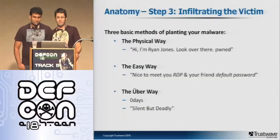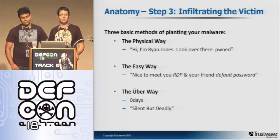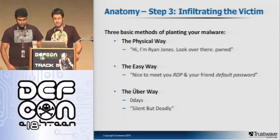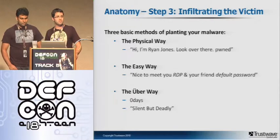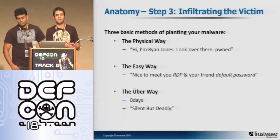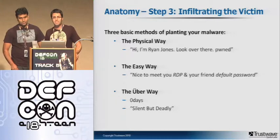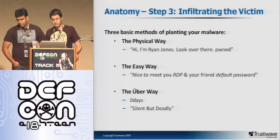Step three: infiltrating your victim. You have the physical way — walk up to a computer, stick a USB key in, and it puts the malware on the system. The easy way we often see is remote desktop with default passwords — we see those all the time. The malware being installed has complex properties, but the attack vector is very simple — something that should not be there, but we see it hundreds of times. And then you have the zero-day. In most cases attackers use vulnerabilities that are rather old — things that have been around for a very long time and are just available for attackers to take advantage of.